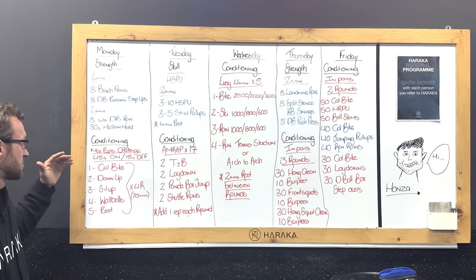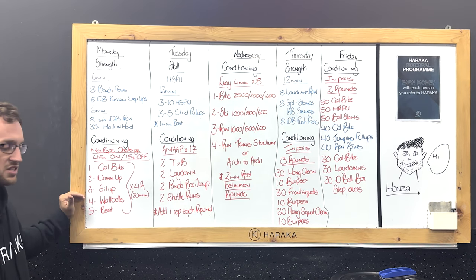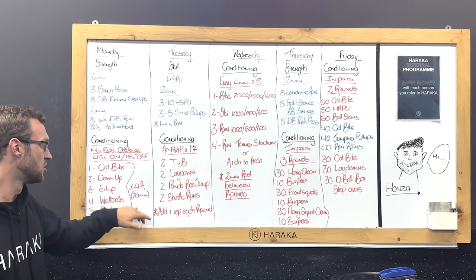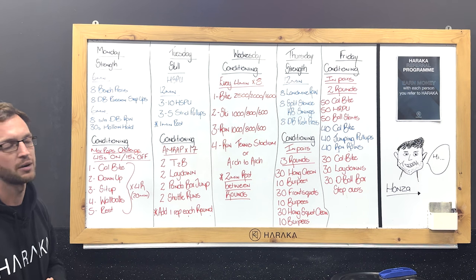Exercise number one is going to be calories on the bike. Number two is going to be down-ups. Then you've got sit-ups, warbles, and then your last minute you'll be able to rest. We're going to do that for four rounds. It's going to be a total of a 20 minute amrap.